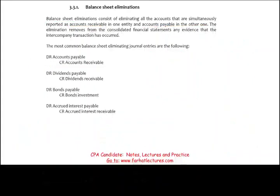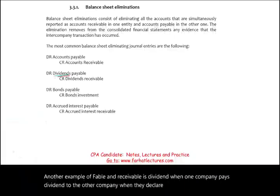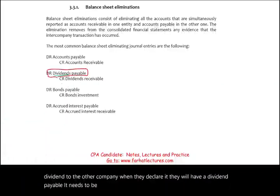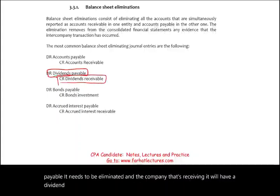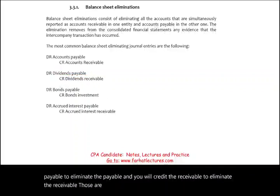Another example of intercompany payable and receivable is dividends. When one company declares a dividend to the other, the declaring company will have a dividend payable and the receiving company will have a dividend receivable — both need to be eliminated. You debit the payable to eliminate it and credit the receivable to eliminate it, since those are interrelated transactions.